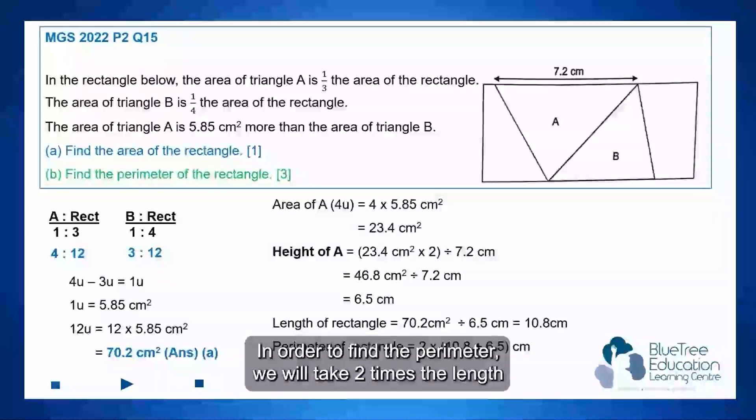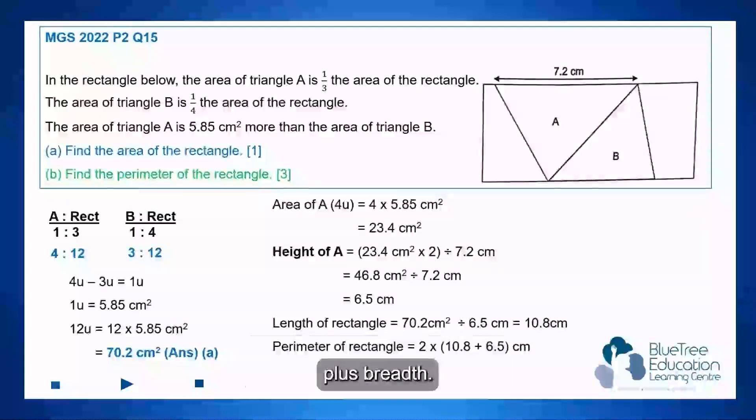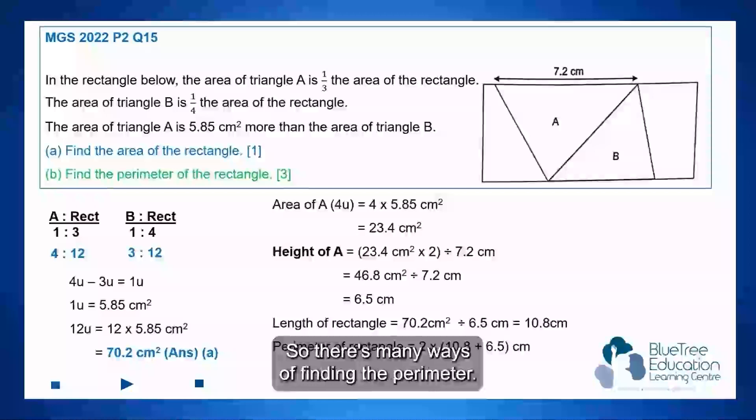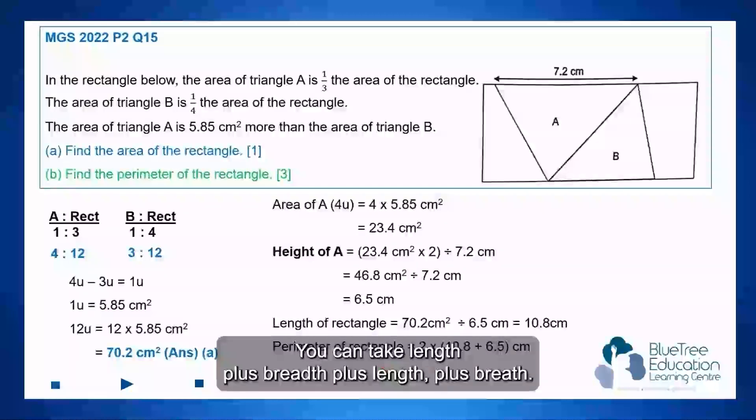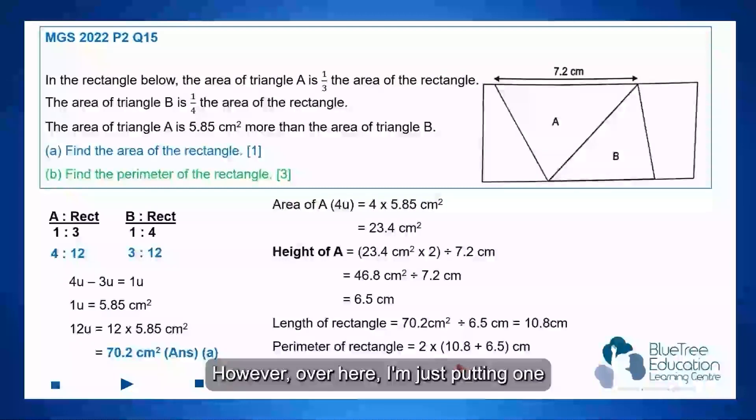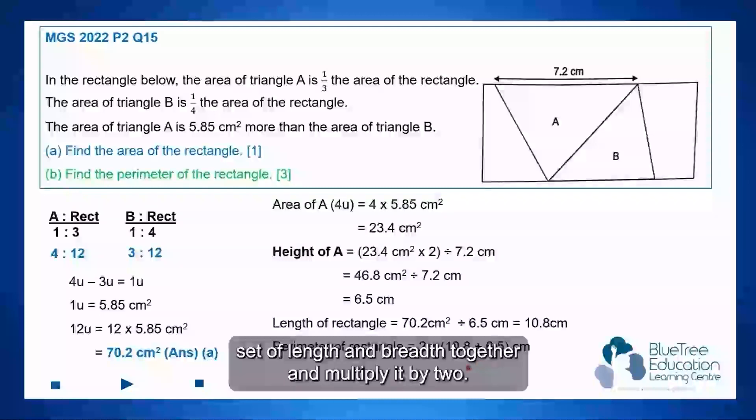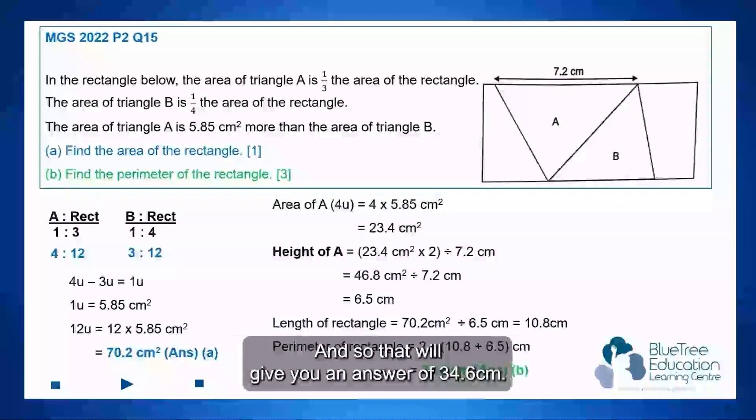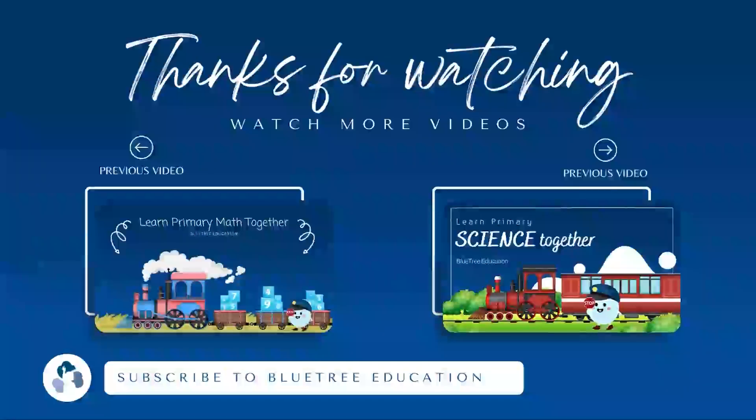In order to find the perimeter, we will take 2 times the length plus breadth. So there's many ways of finding the perimeter. You can take length plus breadth plus length plus breadth. However, over here, I'm just putting one set of length and breadth together and multiply by 2. And so that will give you an answer of 34.6 cm.